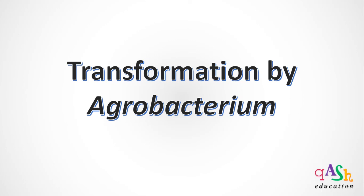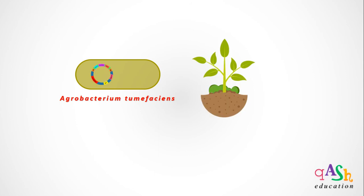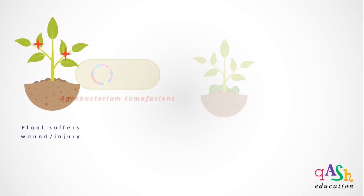Welcome to Cash Education. Today we will study the process of transformation by Agrobacterium, which causes crown gall disease in plants. Agrobacterium tumefaciens is a phytopathogen which carries the Ti plasmid, and this gives it the capability to infect plants with crown gall tumor.